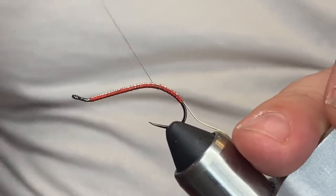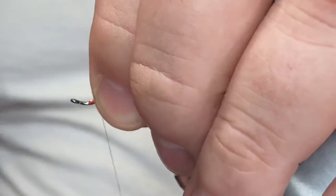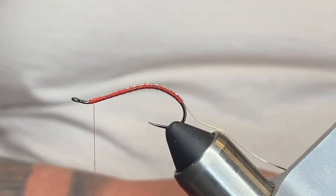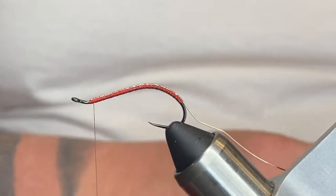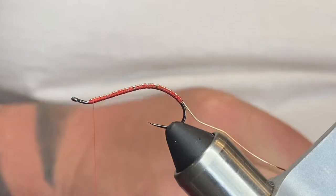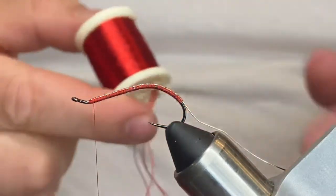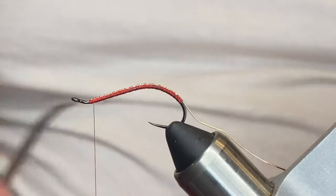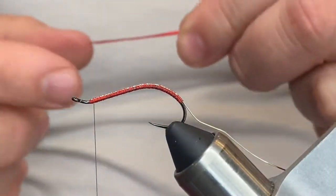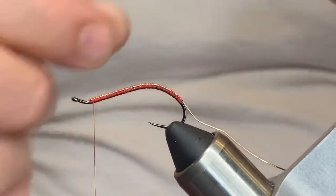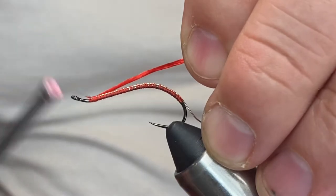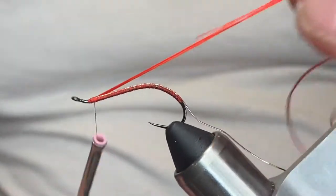Run this deep into the bend and then once again back up. At this point, we're going to come in with—I'm using tonight four-strand rayon floss by Danville.